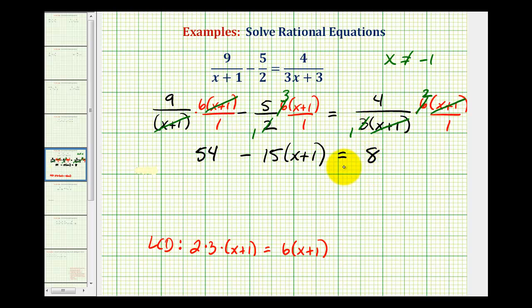Notice the result of multiplying every fraction by the LCD eliminates all of the fractions, and now we solve the resulting equation. So now we'll distribute, and because we have minus 15 times the quantity x plus 1, we can think of distributing a negative 15. So we have 54 minus 15x minus 15 equals 8. Well, 54 minus 15 is going to be equal to 39, so we have 39 minus 15x equals 8.